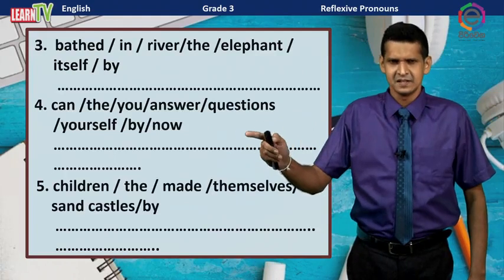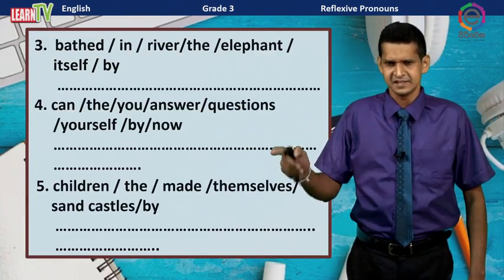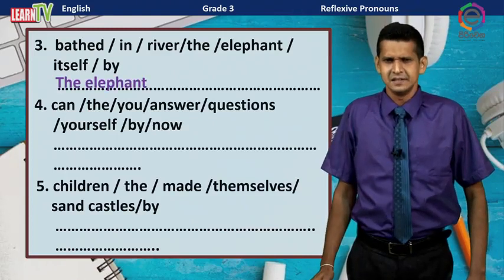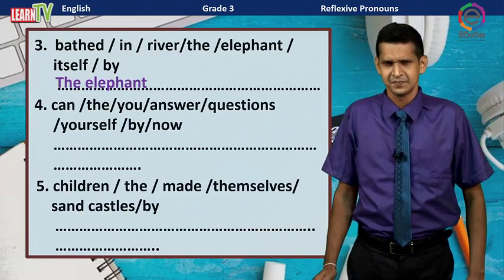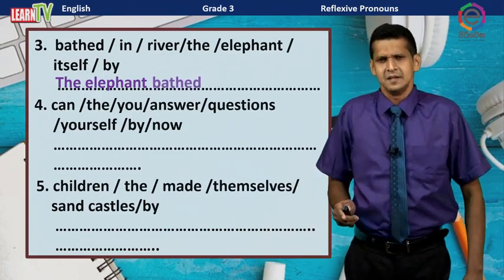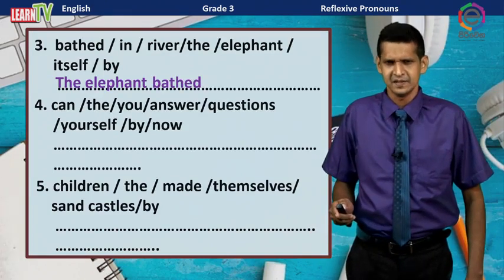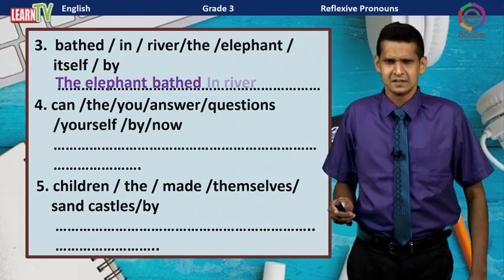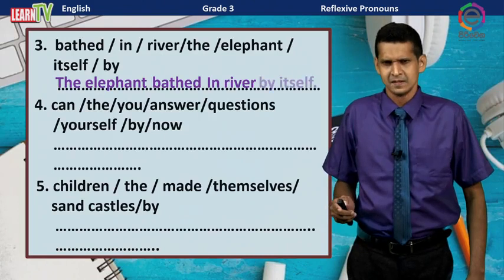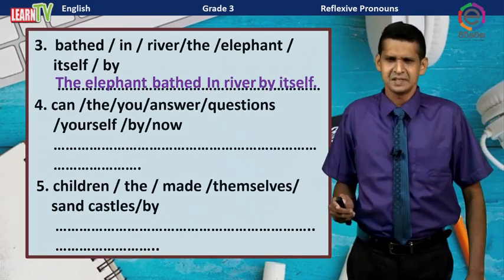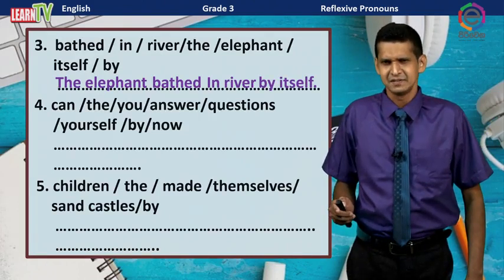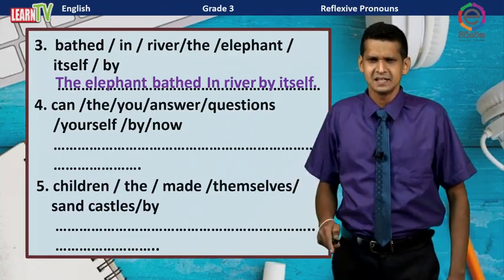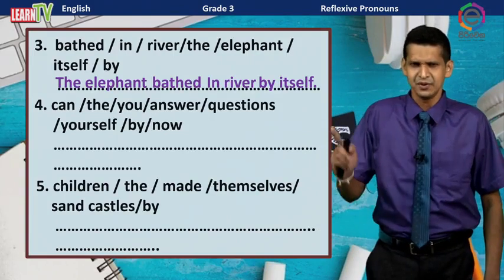This is the third one. The subject is 'the elephant,' the verb is 'bathed,' and the location is 'in the river.' The sentence is: The elephant bathed in the river by itself.